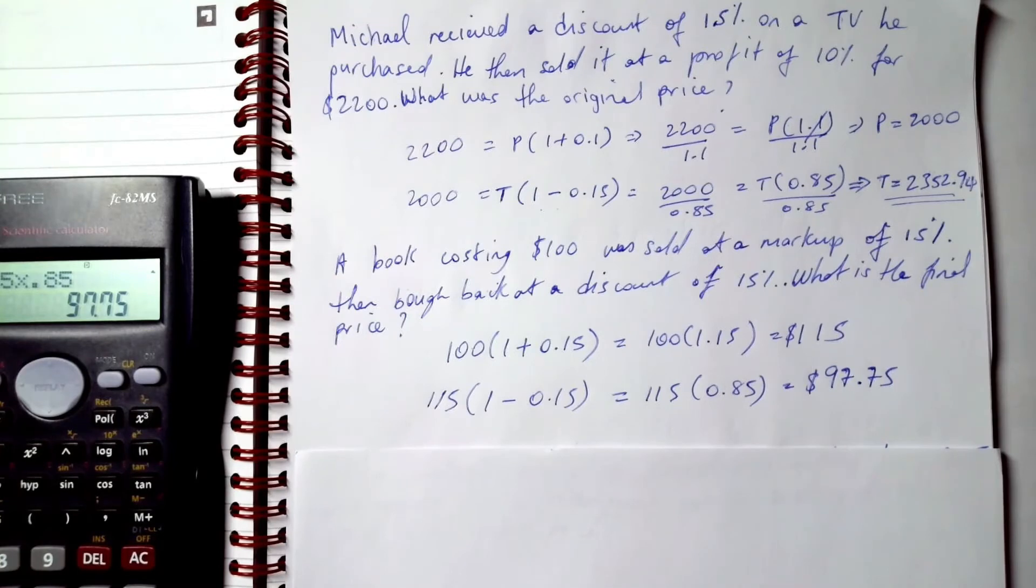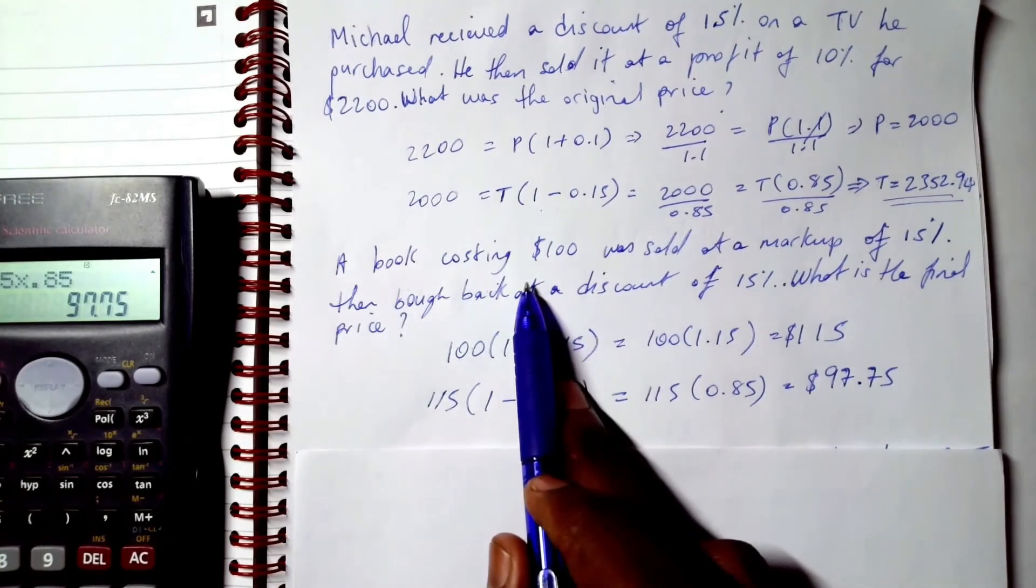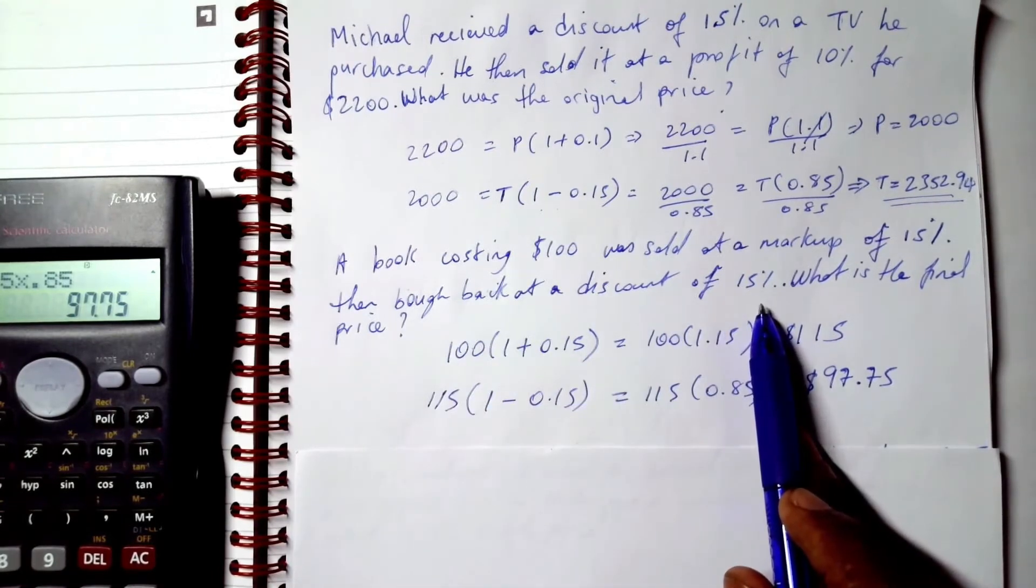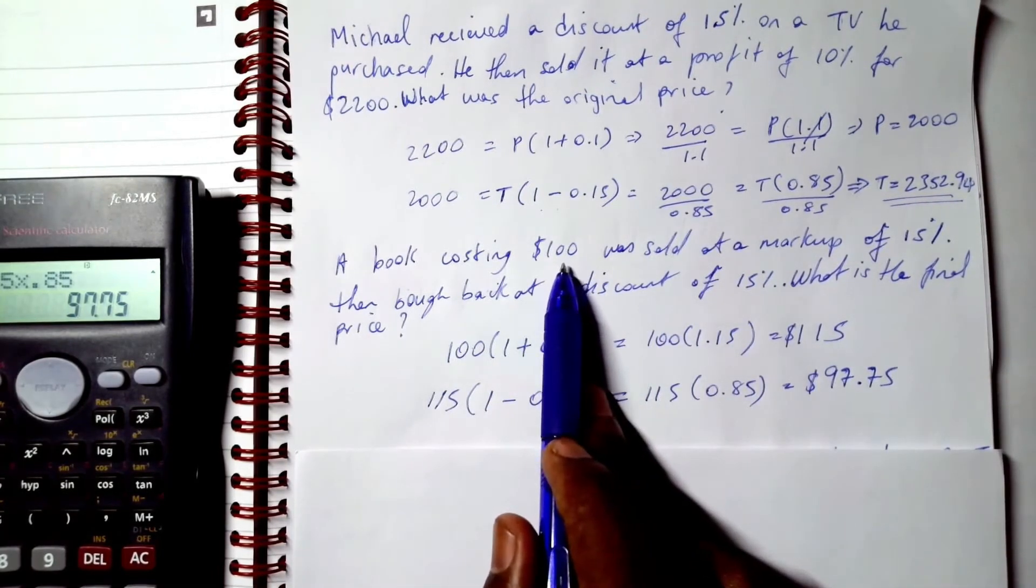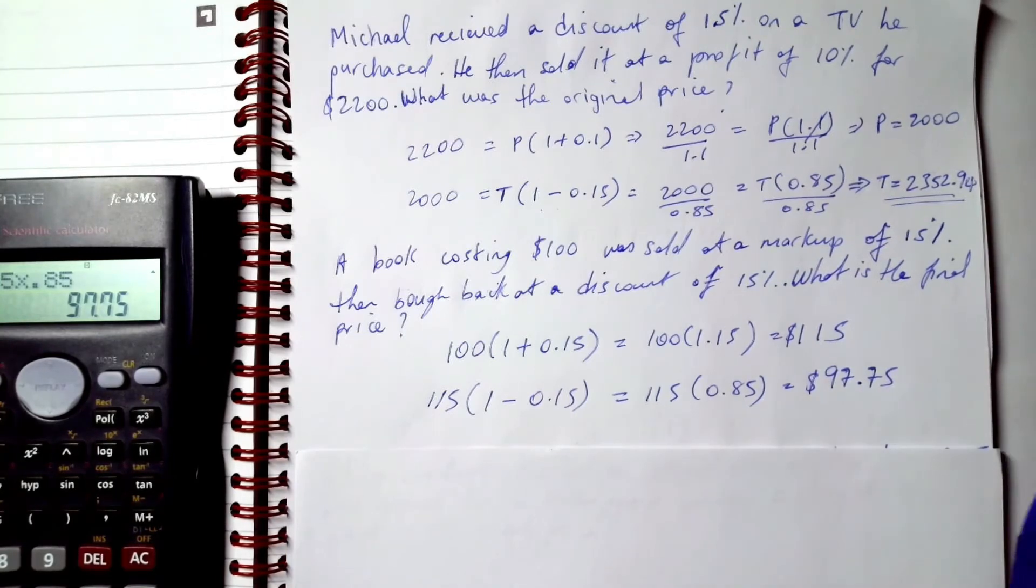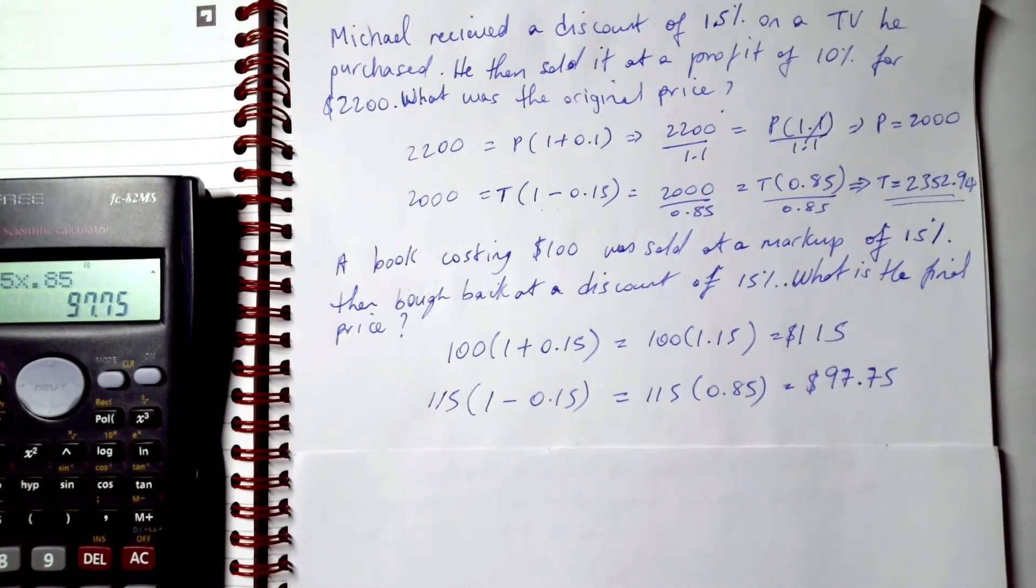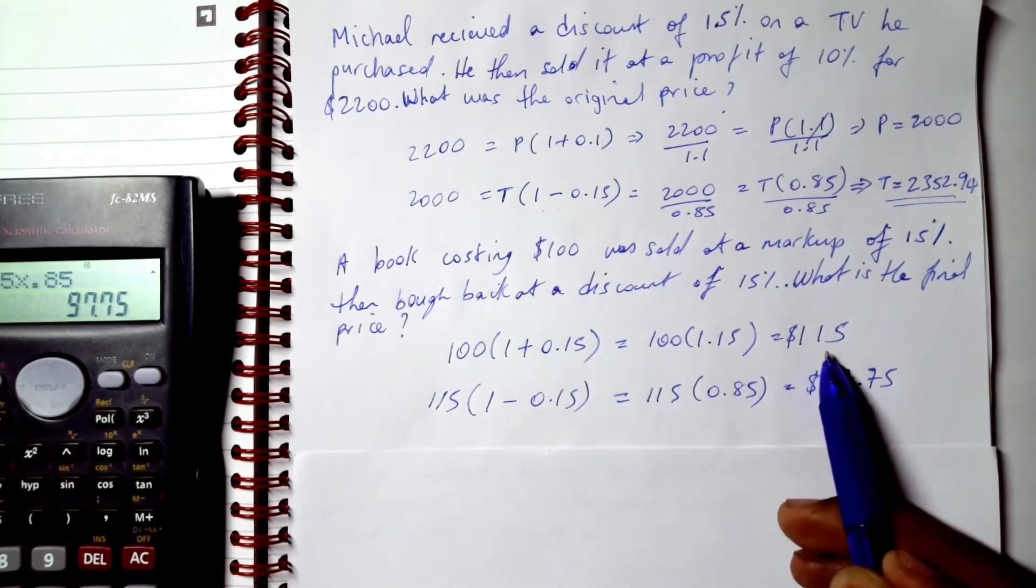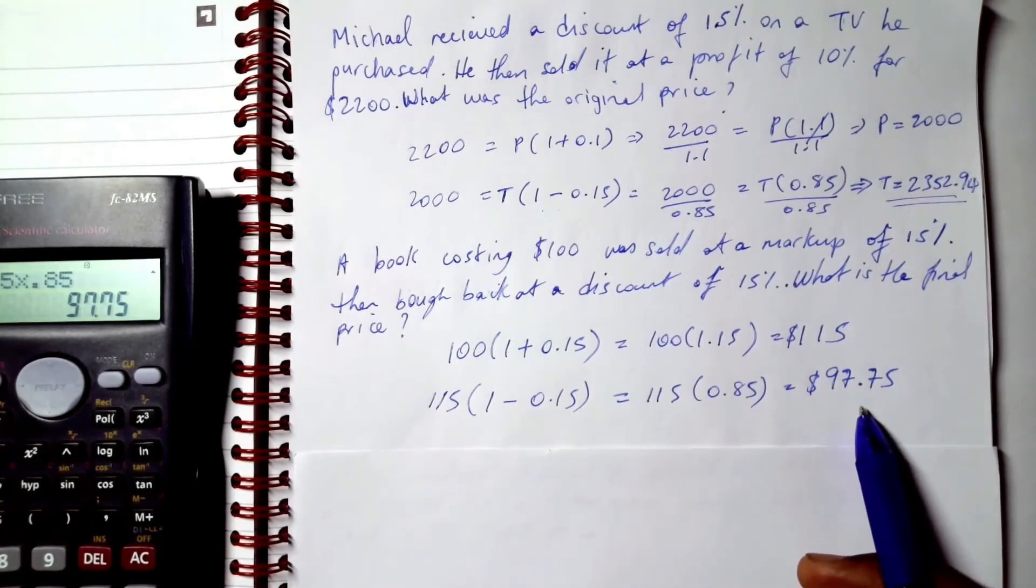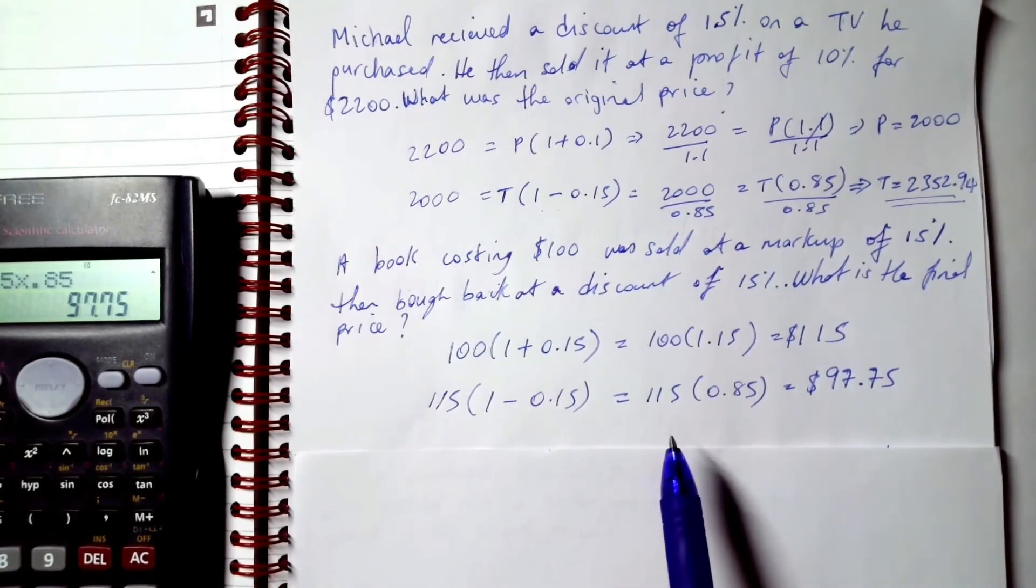I know it looks weird. You sold it at a profit of 15% and you bought it back at a discount of 15%. Shouldn't it be $100? Nope, it will not be $100. If I increase $100 by 10% and then decrease that by 10%, it's not going to be the same. We increased it by 15% and got this, then decreased it by 15% and got this, which is less than our $100.